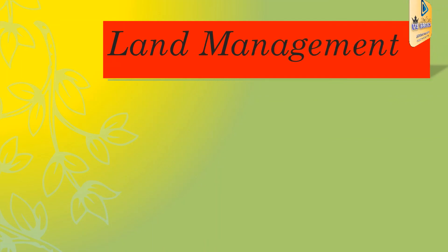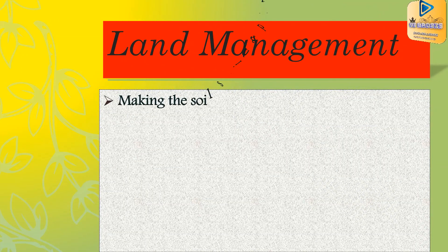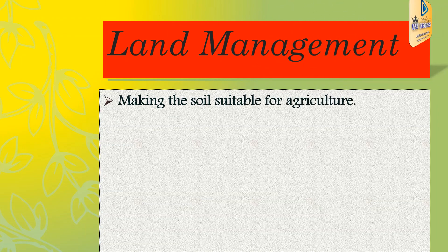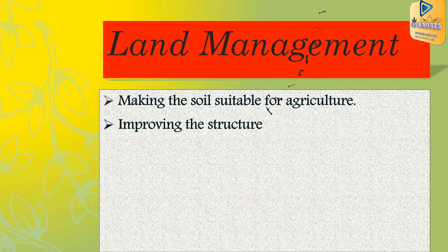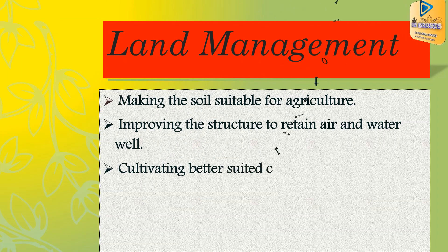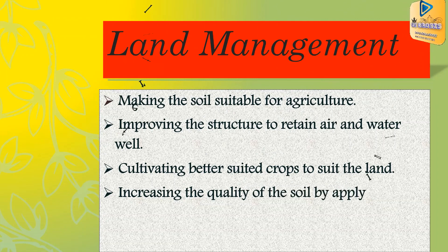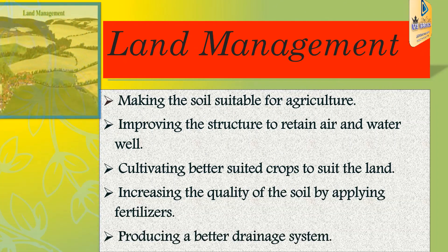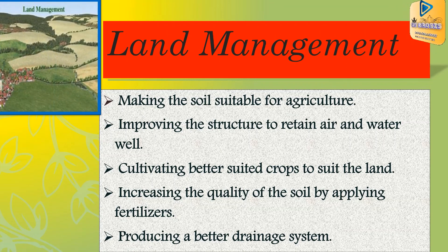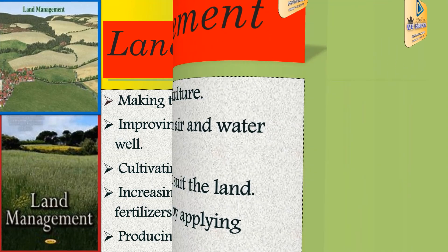After water management in agriculture, we will discuss land management: making the soil suitable for agriculture, employing structures to retain air and water, cultivating crops better suited to the soil, and increasing the quality of the soil by applying fertilizer for better management and high productivity.